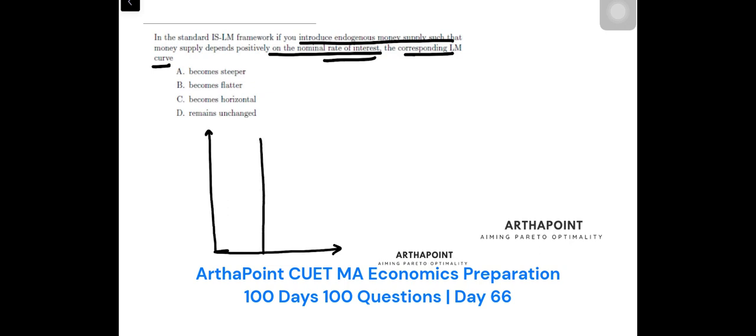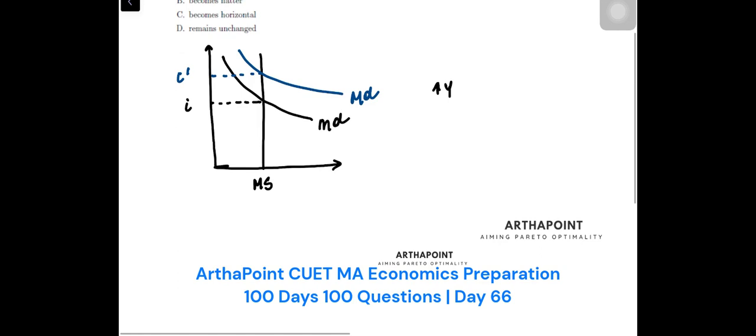This is your usual money supply and this is your demand for money. This is your interest rate. Now when your income increases, the demand for money increases, so the interest rate shoots up.